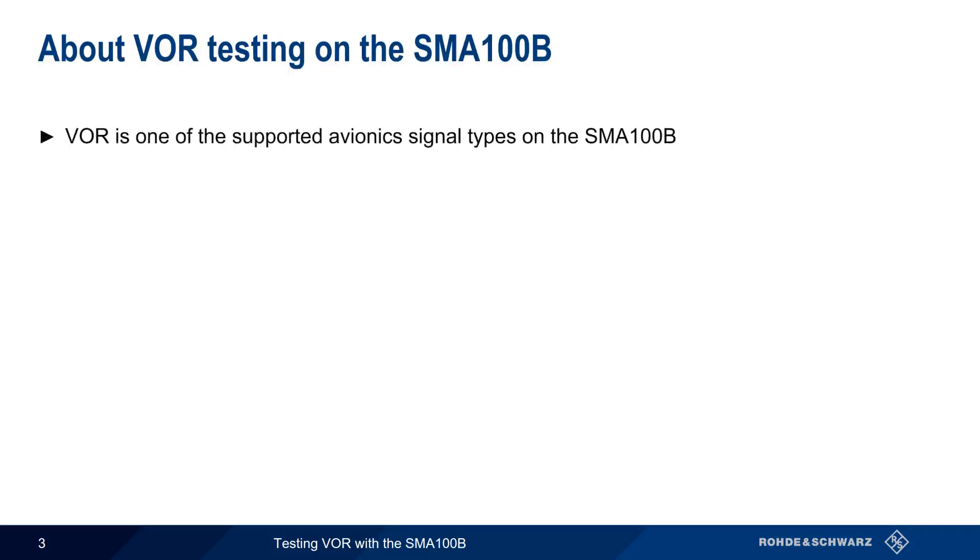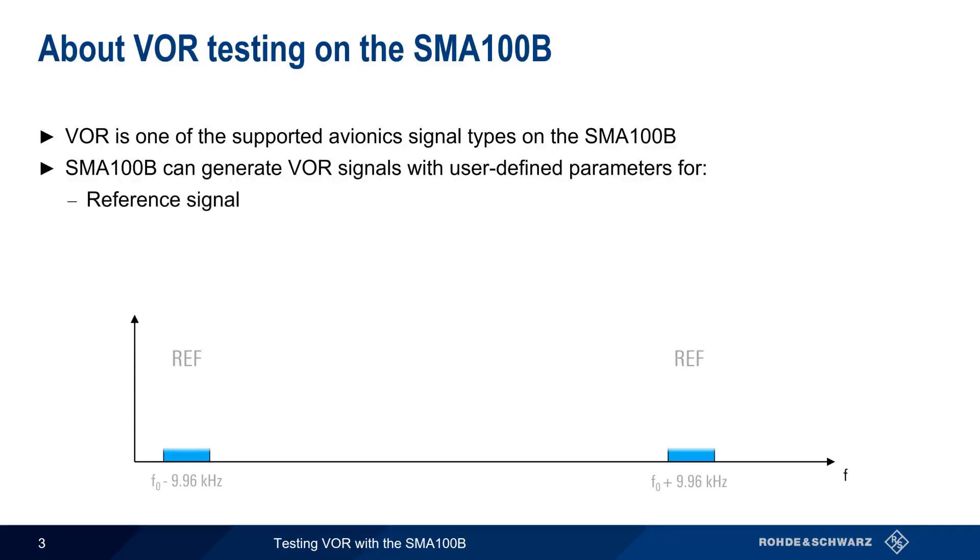VOR is one of the supported avionic signal types on the SMA-100B. In other words, the SMA can generate VOR signals with user-defined parameters for the three components of a VOR signal, namely the reference signal, the variable signal, and the COMID signal.